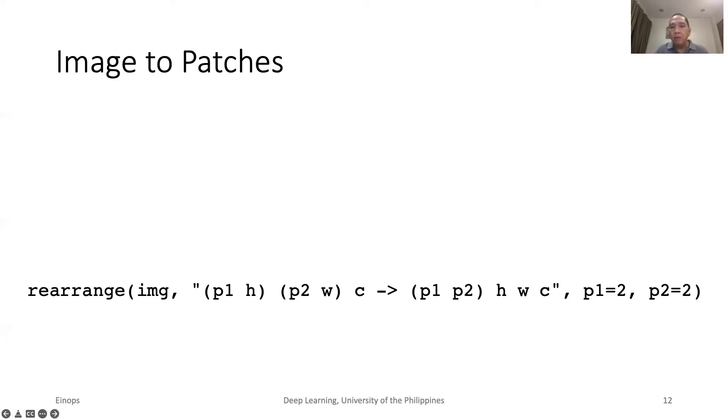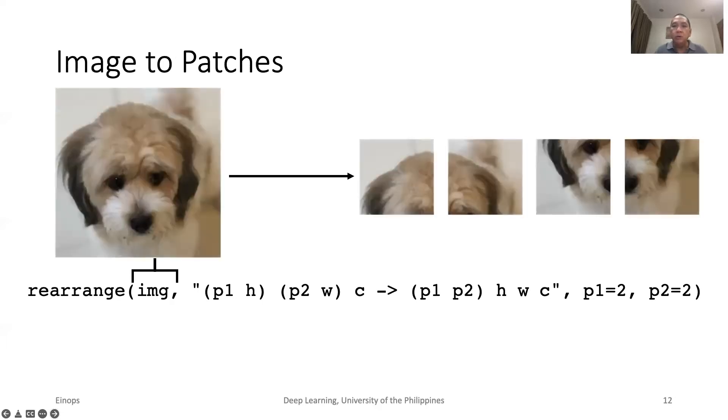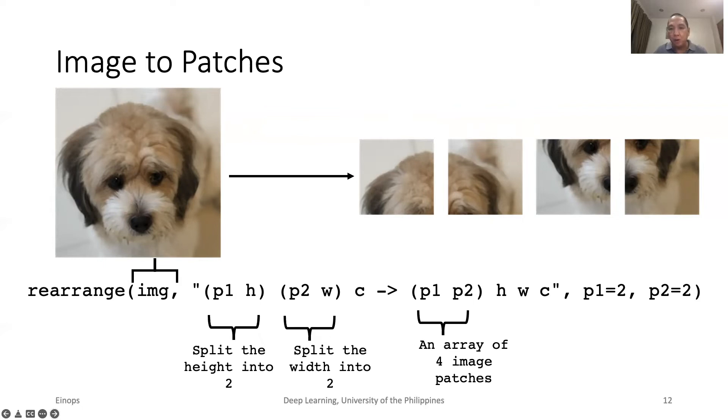Let us solve the problem of converting an image into patches. In this example, we split an image into 2x2 patches or 4 patches. The left notation says factorize the height as 2x something. Do the same for the width. The right side says compose a new array of images with length 2x2 or 4. Each element is an image with new height and width from the factorization process. We illustrate the 4 patches in this slide. We can also replace the variables p1 and p2 by its constant value 2. This will be done in some of our examples.